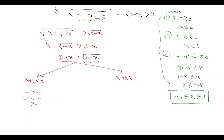In Case 2, when x + 2 ≥ 0, both sides are positive, so I can square both sides. Squaring 2 + x > √(1 minus x) gives 4 + x² + 4x > 1 minus x, which simplifies to x² + 5x + 3 > 0.